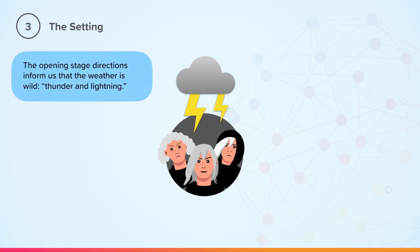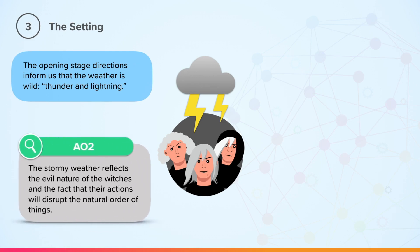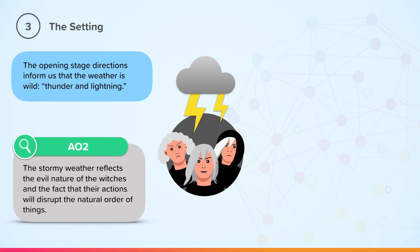We are going to continue to look at the setting and the opening stage directions: thunder and lightning. The stormy weather reflects the evil nature of the witches and the fact that their actions will disrupt the natural order of things.